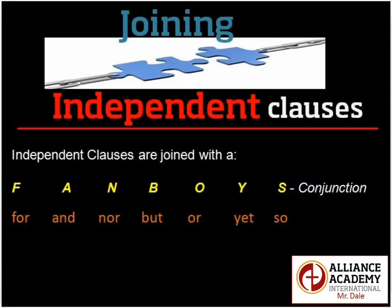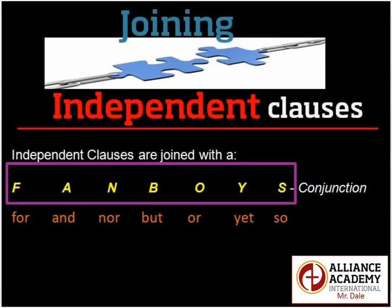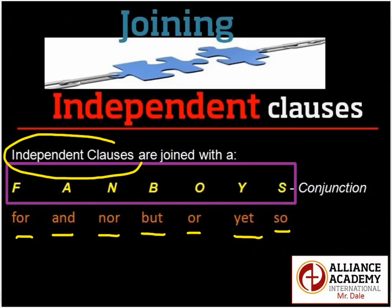Now let's talk about joining independent clauses — two complete sentences, two complete ideas. We're going to join them with what we call a FANBOYS conjunction. FANBOYS is an acronym that helps us remember these conjunctions: For, And, Nor, But, Or, Yet, and So. These are called coordinating conjunctions. A FANBOYS conjunction will always join independent clauses.